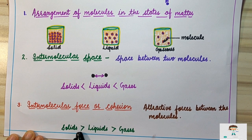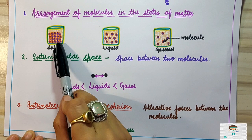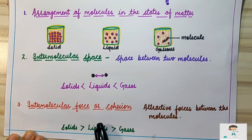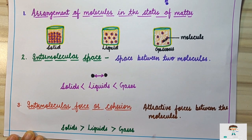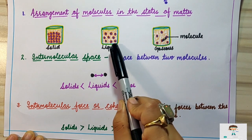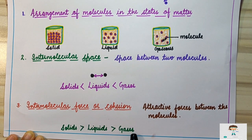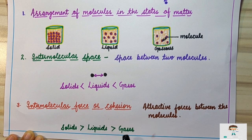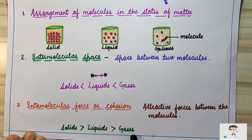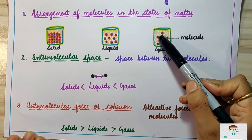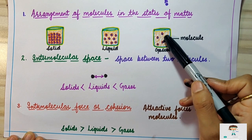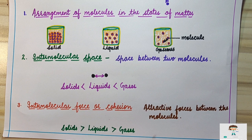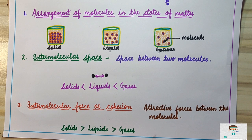To summarize intermolecular forces: solids have maximum intermolecular forces because molecules are closely packed. Liquids have intermediate intermolecular forces because particles are loosely packed. Gases have minimum intermolecular forces because particles are independent of one another and have the least interactions.